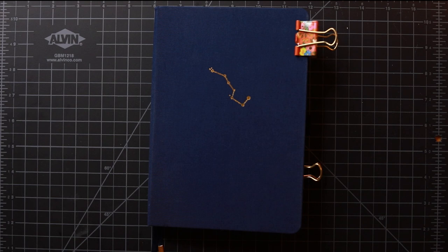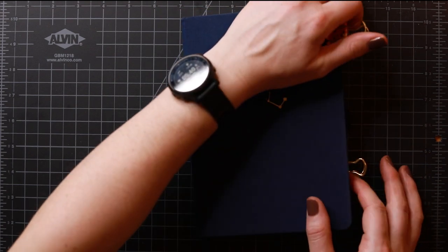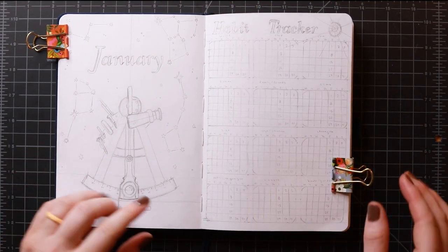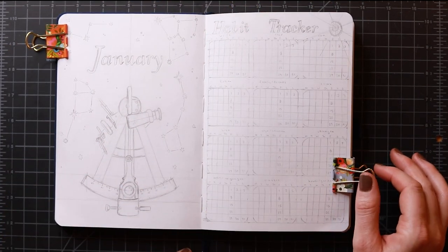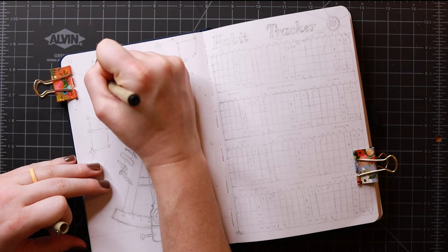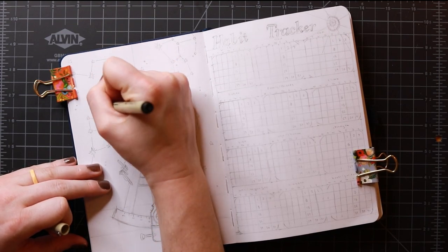So once again I am using my Archer and Olive A5 Night Sky Blank Pages notebook. So my theme for this month is navigation and navigational instruments. For example sextants, compasses, stars, etc.